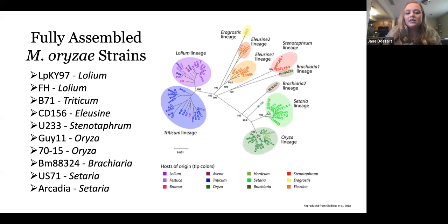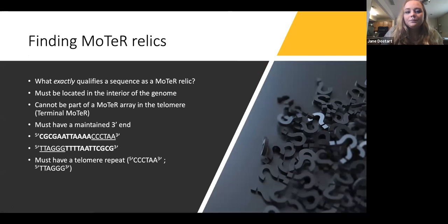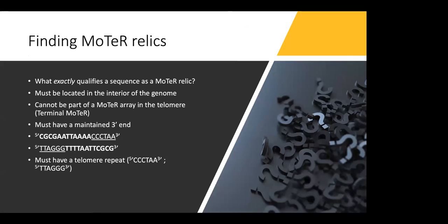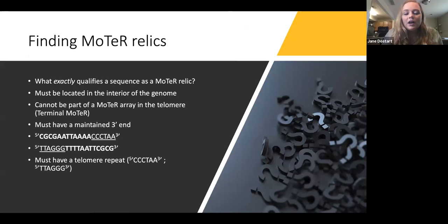I looked at 10 different strains from various lineages from this single species. We have the Lolium lineage, which is for rye grasses, Triticum for wheat, Eleusine for goose grasses, Stenotaphrum for St. Augustine, Oryza for rice, Brachiaria for signal grass, and Setaria for foxtail or bristle grasses. And for my methods, I first had to define my parameters for what exactly a MoTeR relic, what I would consider a MoTeR relic to be.